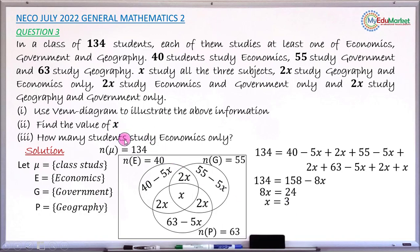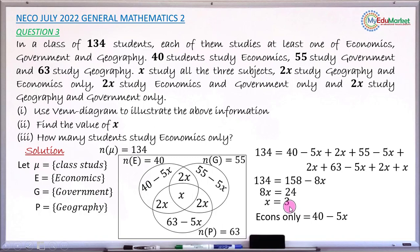The last question asks how many students study economics only. Economics only is represented by the expression 40 − 5x. Substituting x = 3: 40 − 5(3) = 40 − 15 = 25. So 25 students study economics only. This answers all three questions.